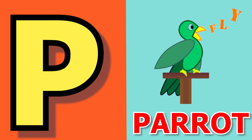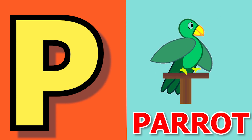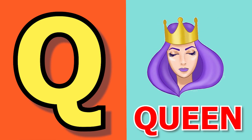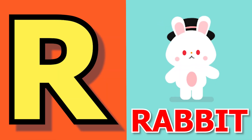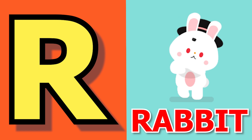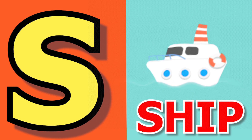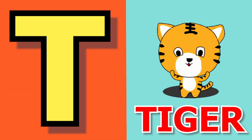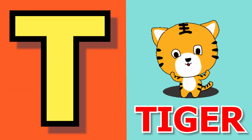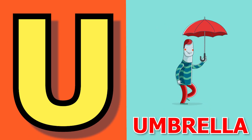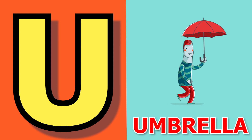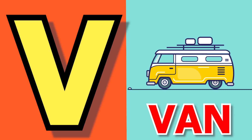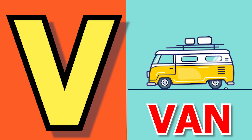P for parrot, Q for queen, R for rabbit, S for sheep, T for tiger, U for umbrella, V for van.